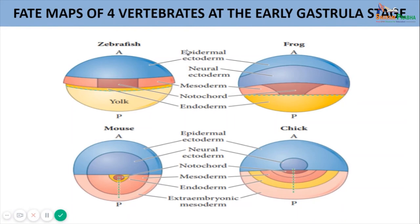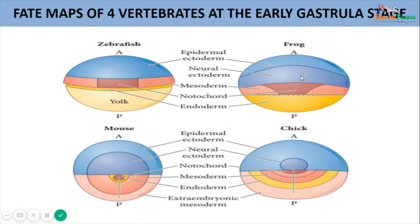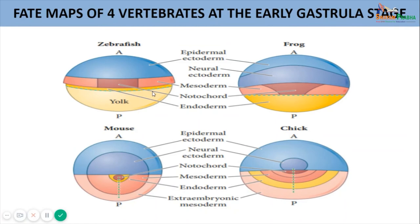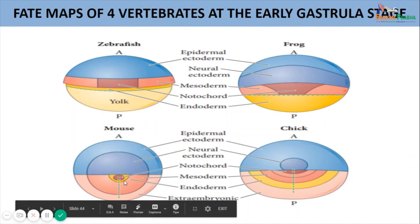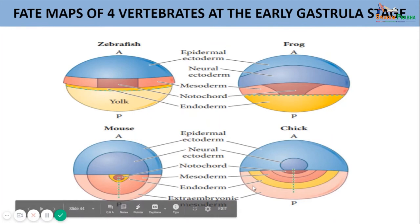Adjacent to epidermal ectoderm lies the neural ectodermal region (a different tinge of blue), which will give rise to the neural tube and nervous system. Below the neuroectoderm is the notochordal region, which will give rise to the notochord of the embryo. On either side of the notochordal region are the lateral regions constituting prospective mesoderm. At the vegetal hemisphere are the yolky blastomeres collectively forming the prospective endoderm. A dashed green line indicates the site of ingression — the paths cells will follow as they migrate from exterior to interior during gastrulation.